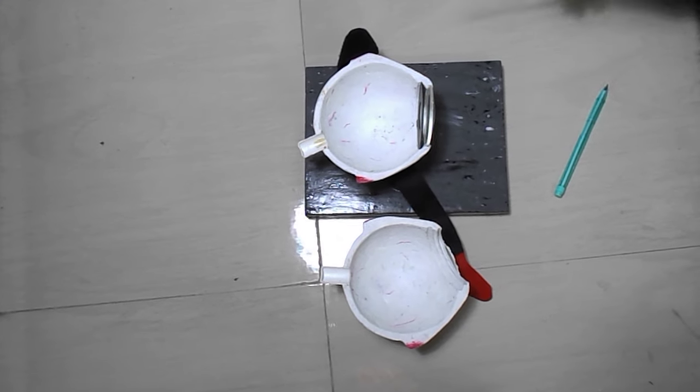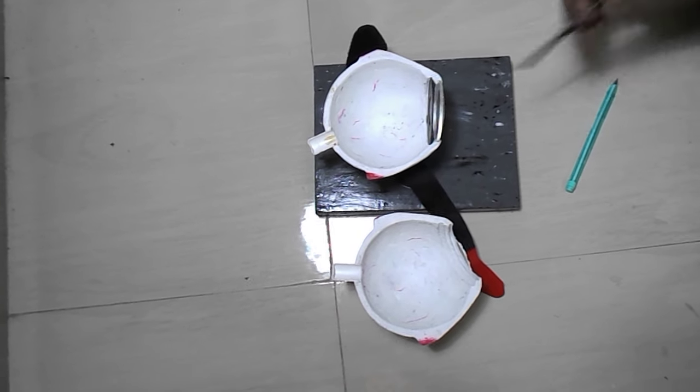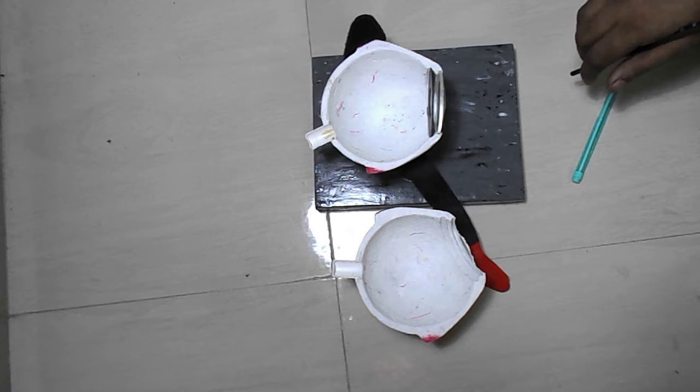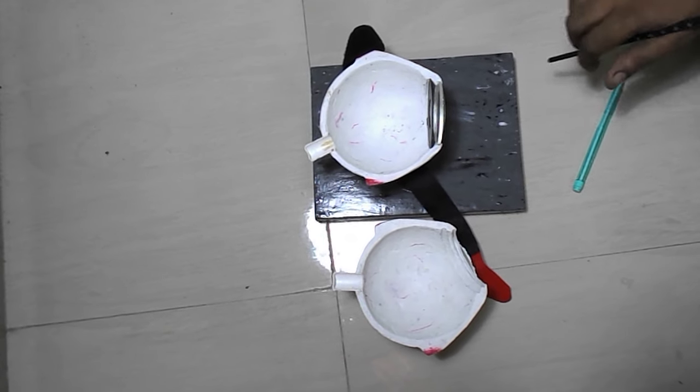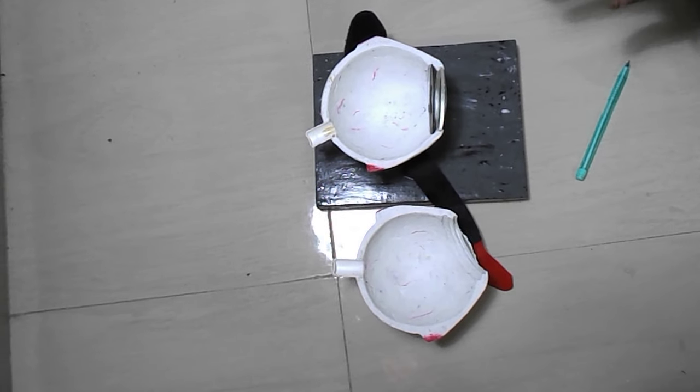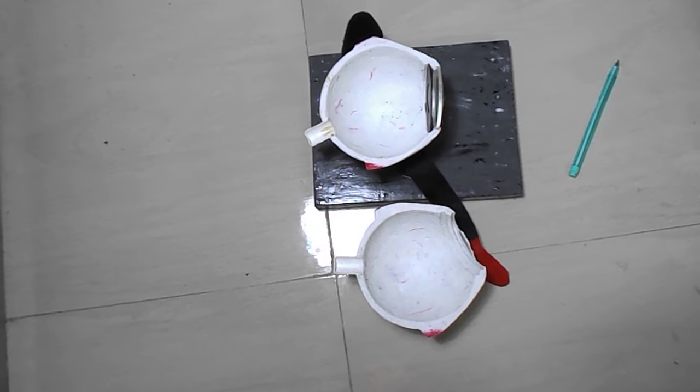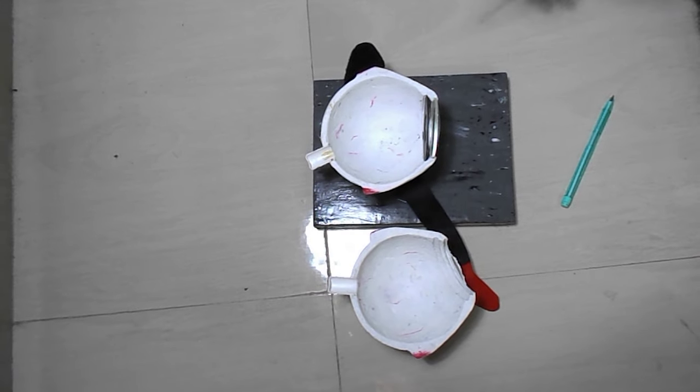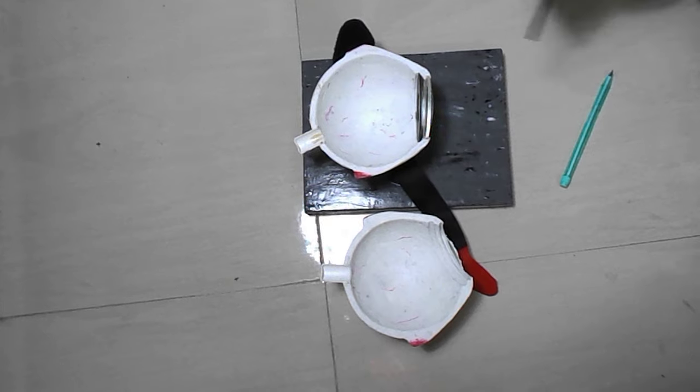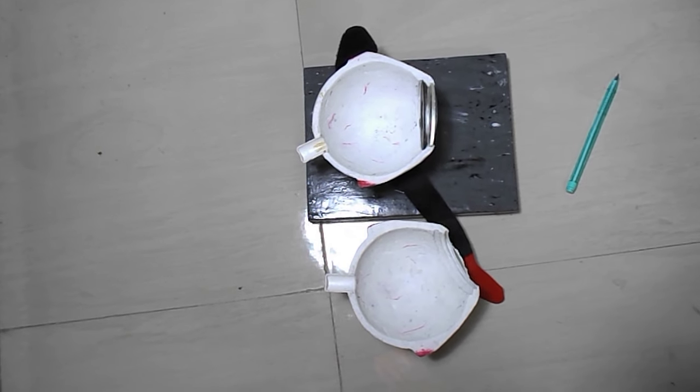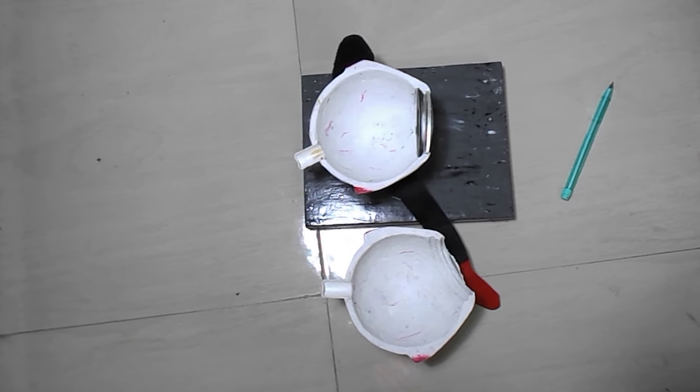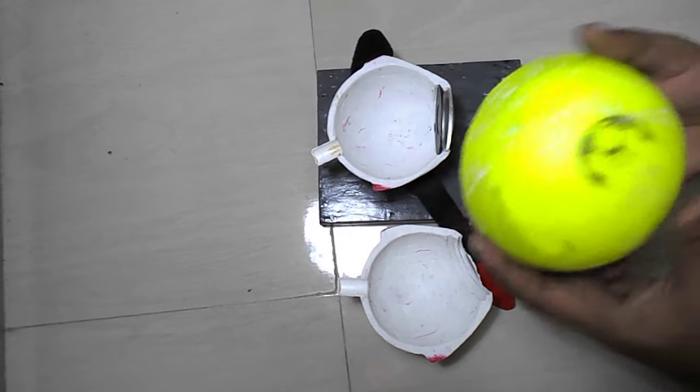Okay friends, this is a model of an eye that I made for a school project. I used all the local materials that are available in your local market near the house. For example, I used plastic balls.